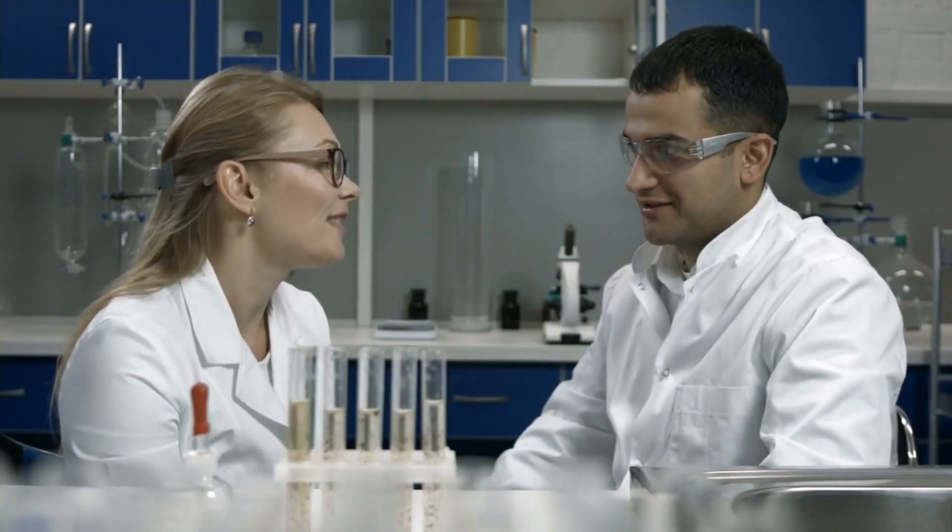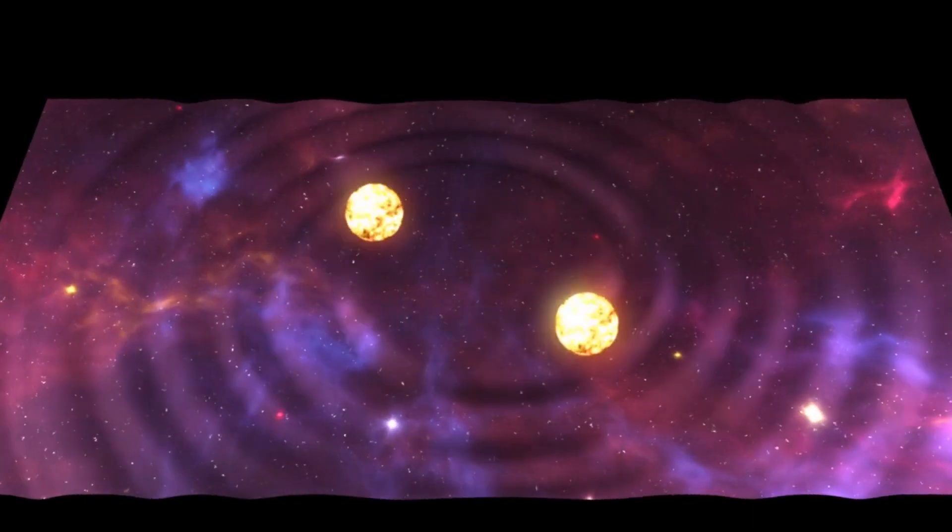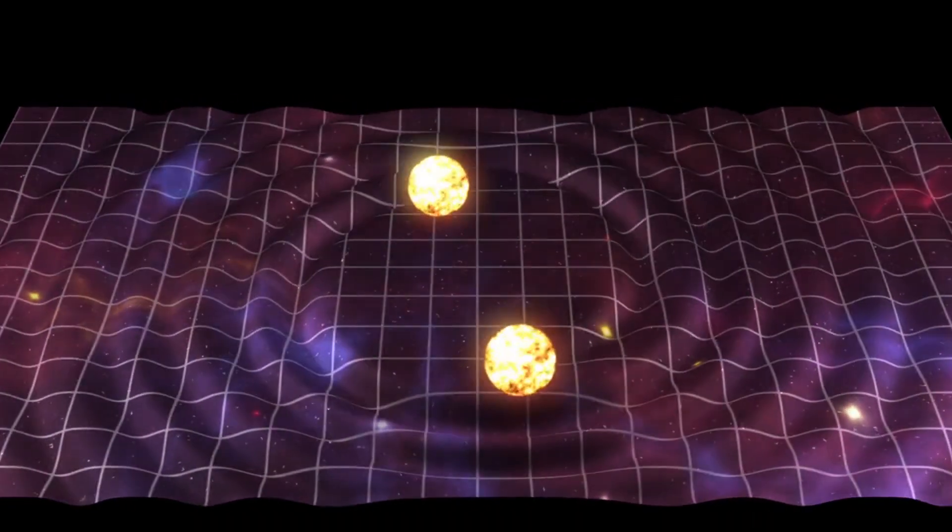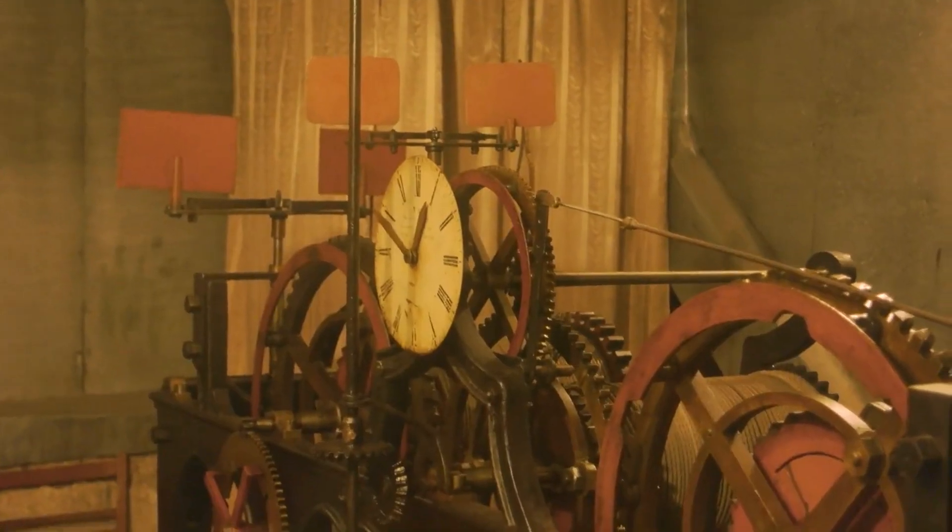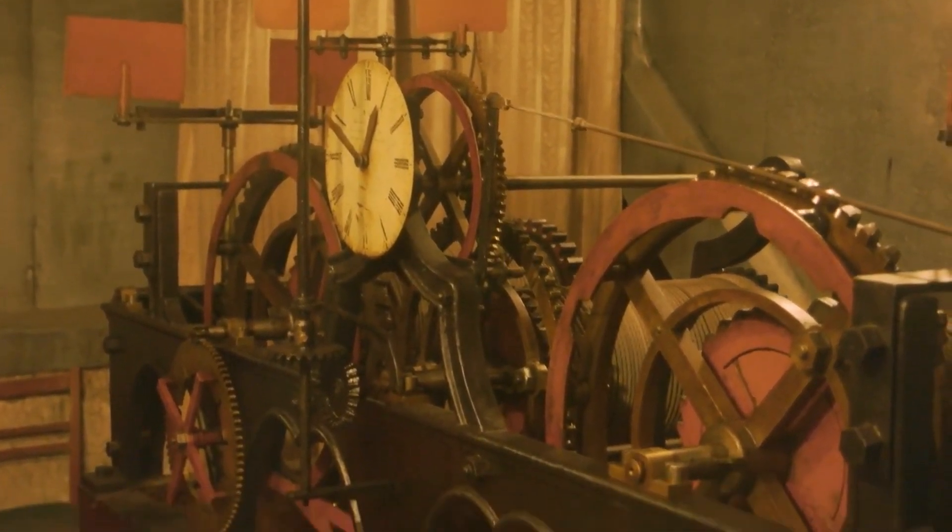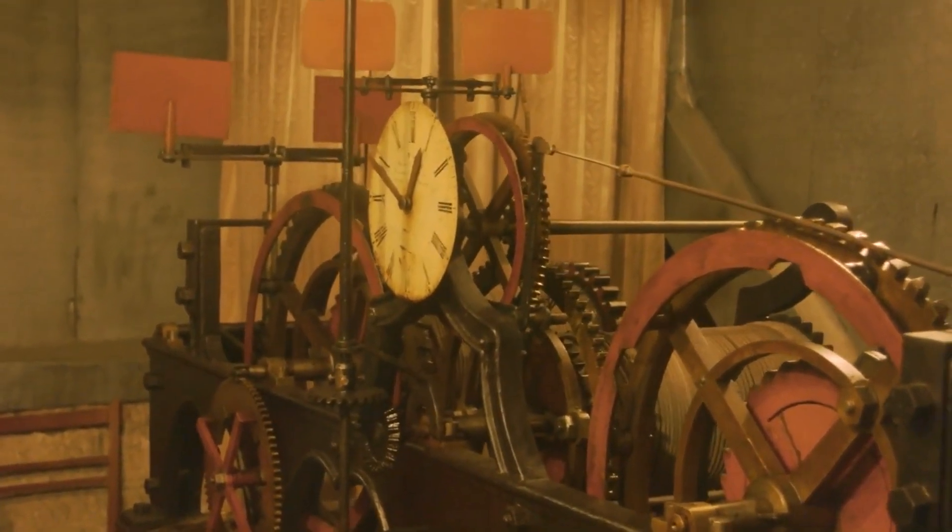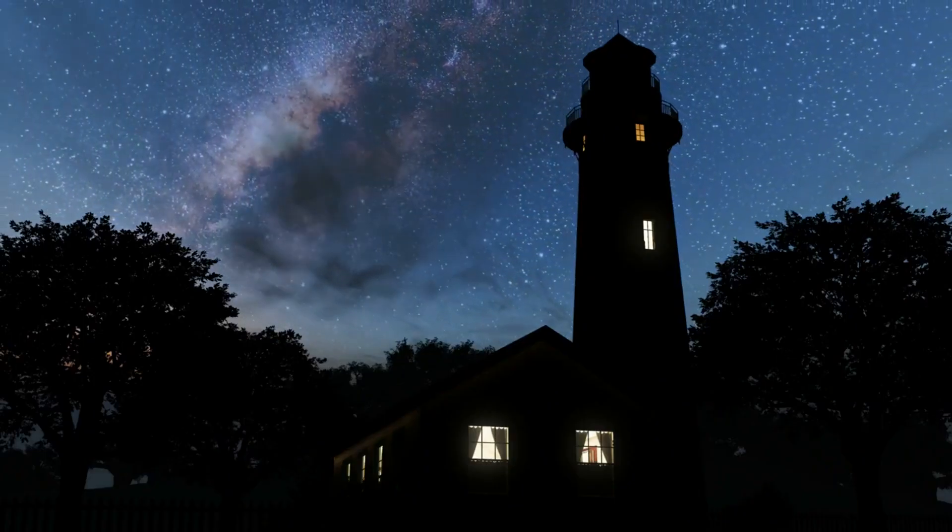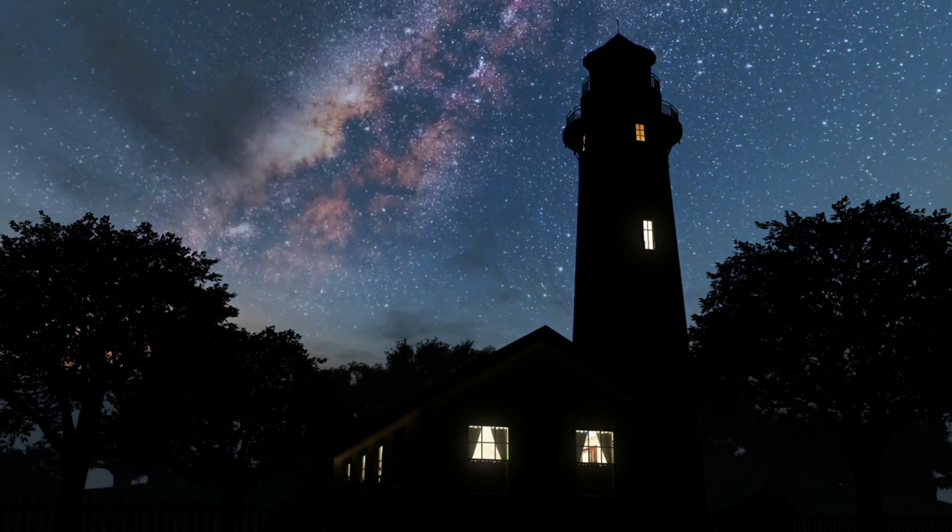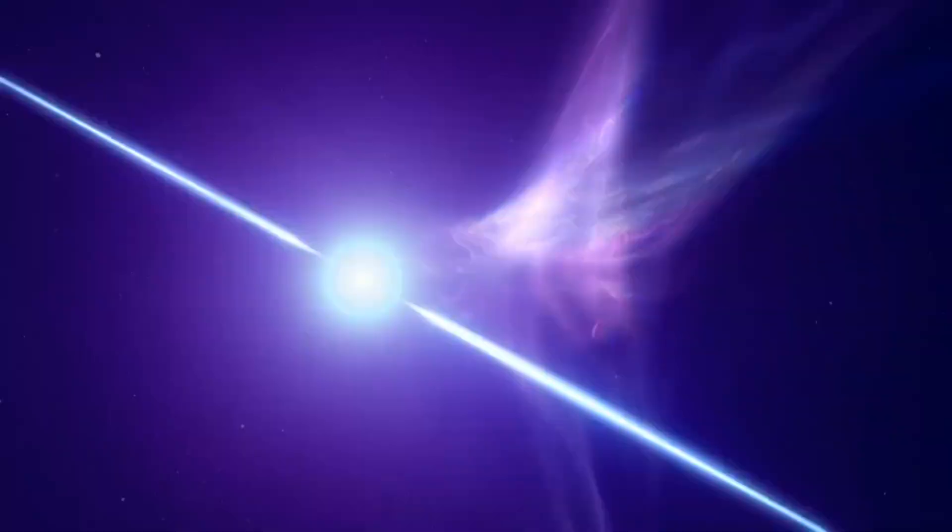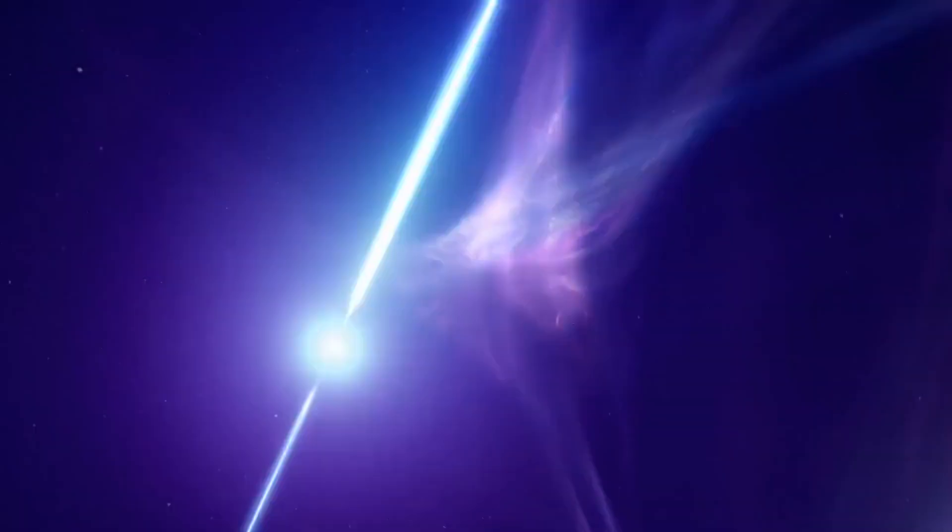Scientists from Nanograv embarked on a groundbreaking study using an array of 67 millisecond pulsars to investigate the presence of gravitational waves. The Indian, Parks, and European pulsar timing arrays also contributed to the study. It allowed them to create a galaxy-sized detector using these cosmic lighthouses. The teams watched the pulsars for 15 years to see if they follow the Hellings-Downs curve. And to their surprise, it did. This signified the presence of gravitational waves of nanohertz frequency.